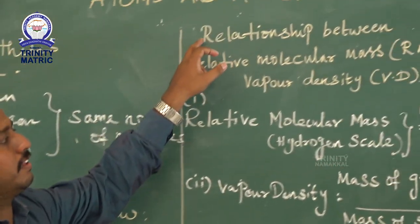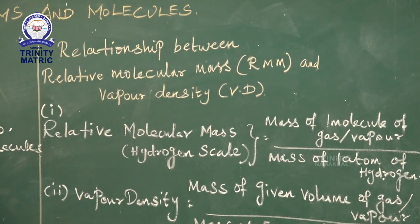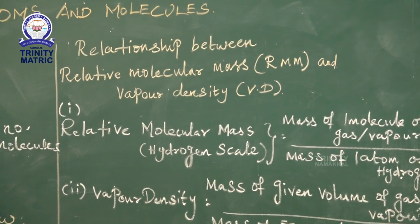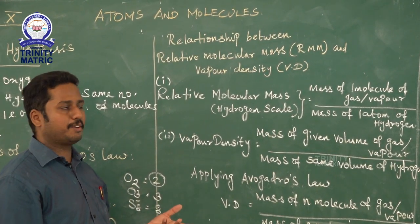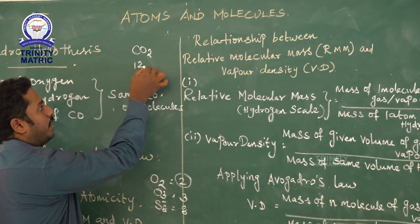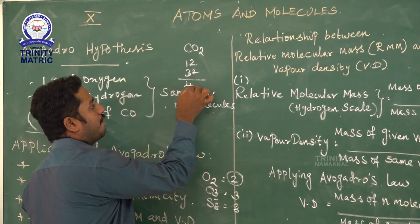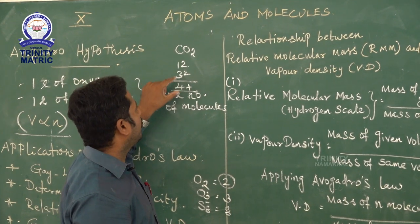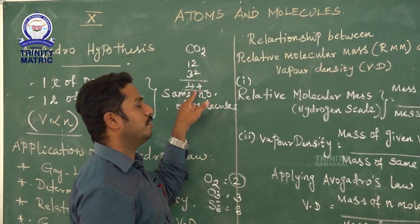The relationship between relative molecular mass and vapor density. Molecular mass is the sum of atomic masses present in a molecule. For example, H2O has a molecular mass of 18 grams, and CO2 has a molecular mass of 44 grams (C = 12, 2 × O = 32, total = 44). The relative molecular mass (RMM) is the ratio of the mass of one molecule of a gas or vapor at STP to the mass of one atom of hydrogen.